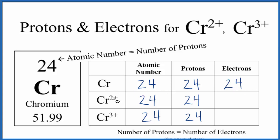For Cr²⁺ here, the chromium 2 ion, this 2 plus means we've lost two negative charges. We've lost two electrons. They're negative. So we just subtract 2 from 24. We get 22 electrons for chromium 2, Cr²⁺.